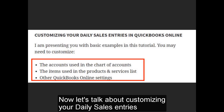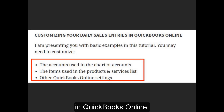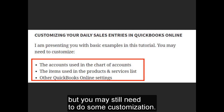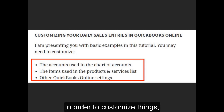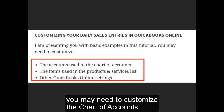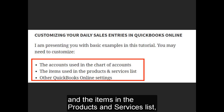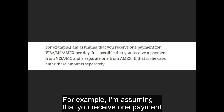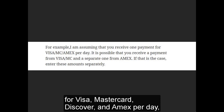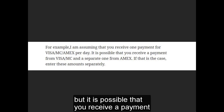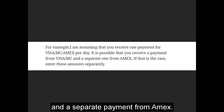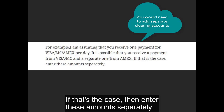Now let's talk about customizing your daily sales entries in QuickBooks Online. I'm presenting you with basic examples in this tutorial, but you may still need to do some customization — you may need to customize the chart of accounts, the items in the products and services list, as well as other QuickBooks Online settings. For example, I'm assuming that you receive one payment for Visa, MasterCard, Discover, and Amex per day, but it is possible that you receive a separate payment from Amex. If that's the case, then enter these amounts separately.